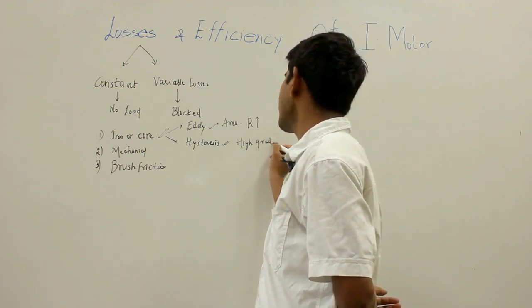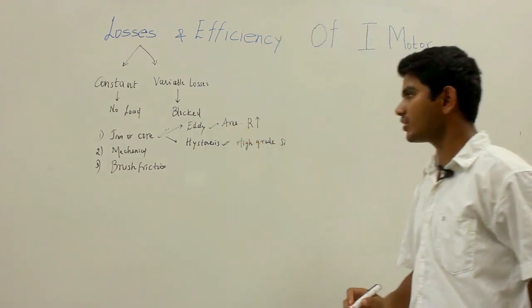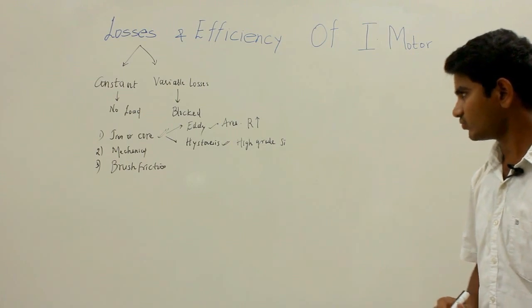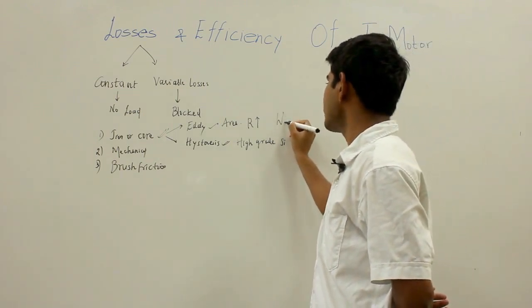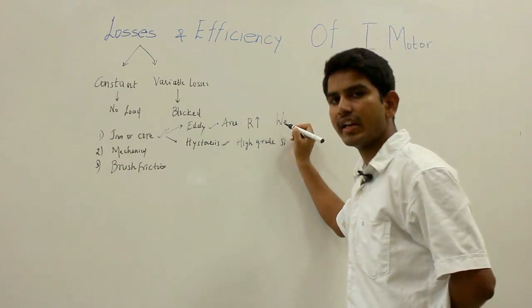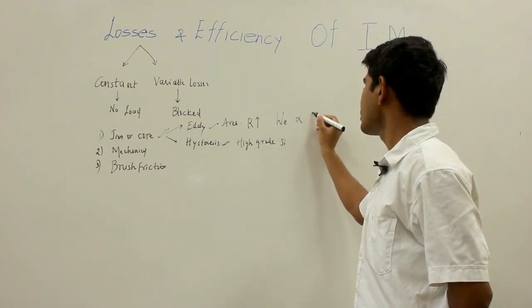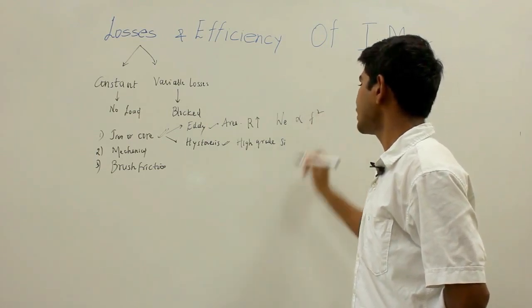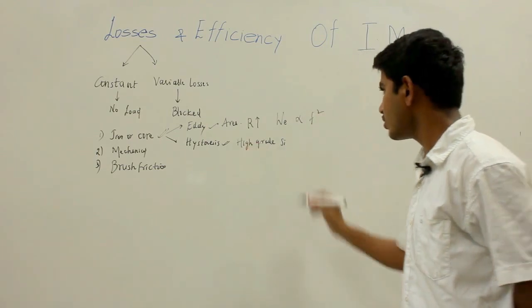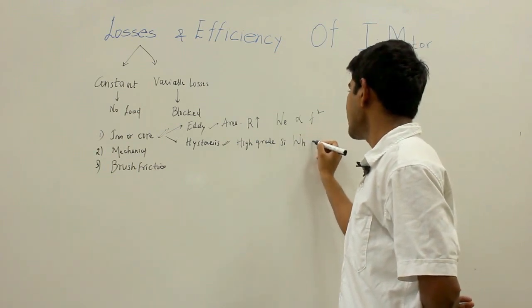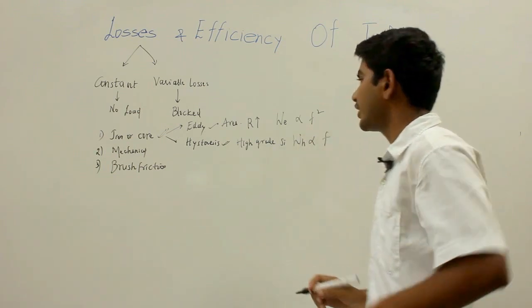The eddy current loss We is proportional to the square of the frequency, whereas the hysteresis loss Wh is proportional to the frequency.